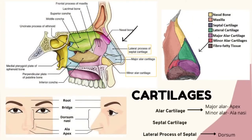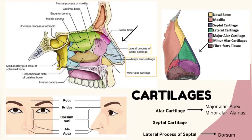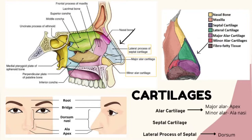Besides the bones, there are also cartilages: the alar cartilage, septal cartilage, and lateral process of the bone. The alar cartilage is separated into major alar and minor alar. The major alar forms the apex of the nose and the minor alar acts as support to the ala nasi.